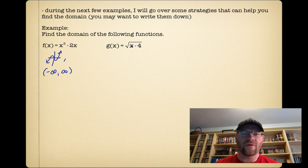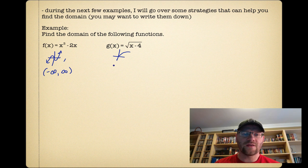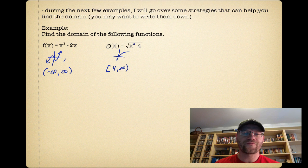For our second function, it's a root function, so we know there's a restriction on the domain. The function is the square root of x minus 4. From transformations, we know this means the function has moved 4 units to the right — normally a square root function starts at (0,0), but it's been moved 4 units to the right, so the domain is from 4 to infinity. Another way to think about it: if I plug in 3, I get the square root of negative one, which I can't take. If I plug in 4, I get the square root of zero, which I can, and any number greater than 4 also works. That's why the domain starts at 4.